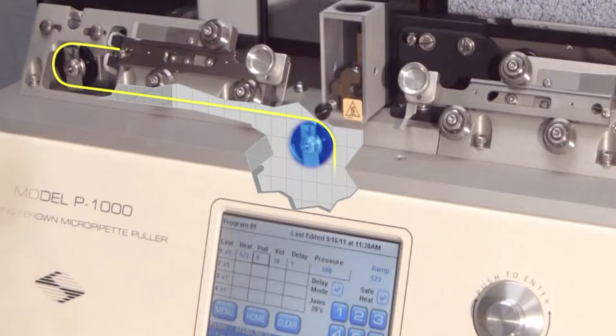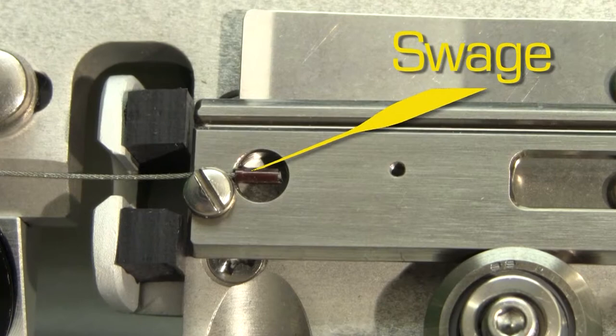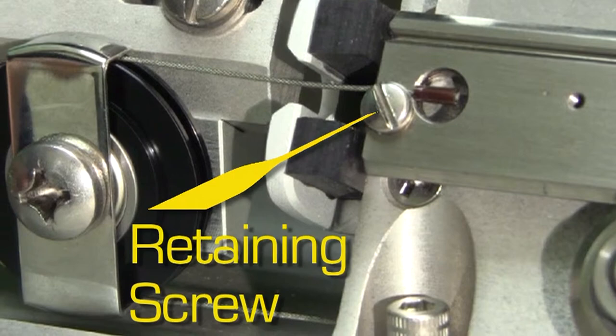First, let's make sure the pull cables are properly attached. The end of each pull cable is terminated with a crimp on swage. The majority of the pull force is transmitted to the puller bar by the cable retaining screw.